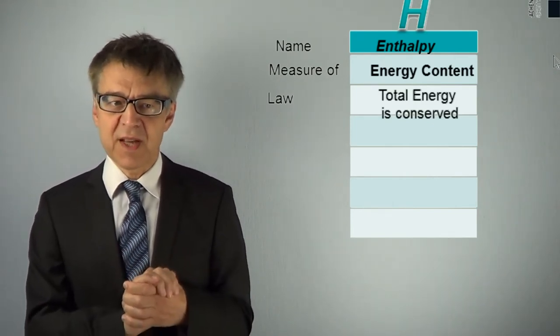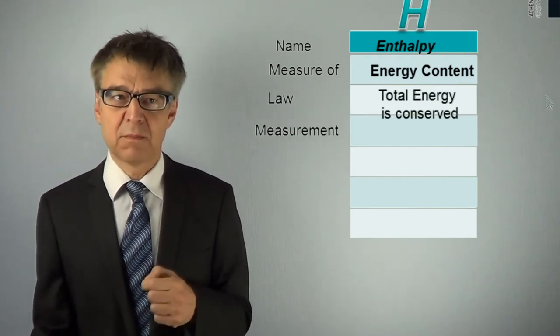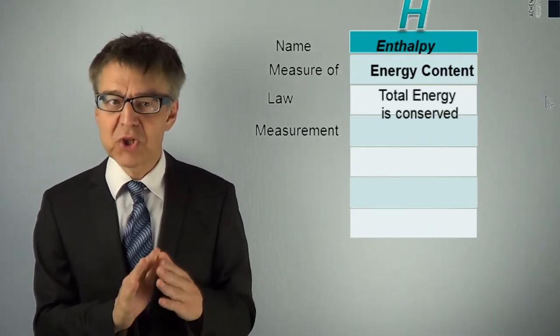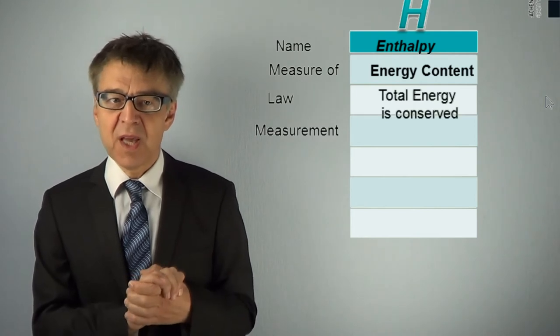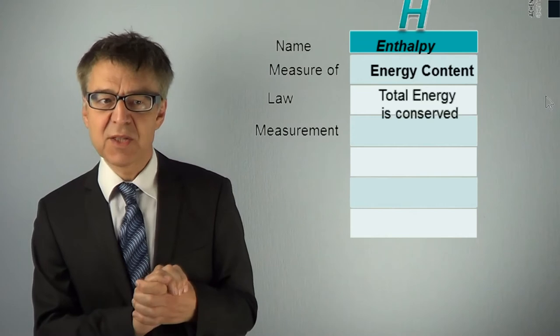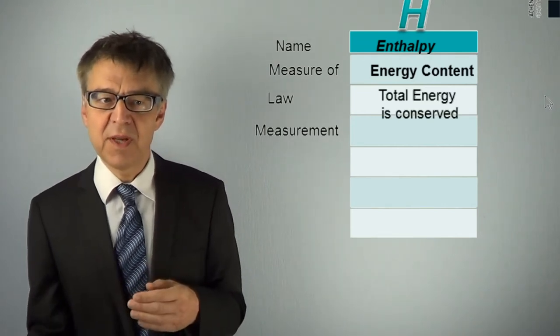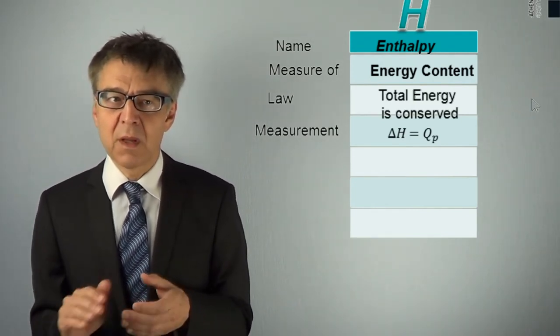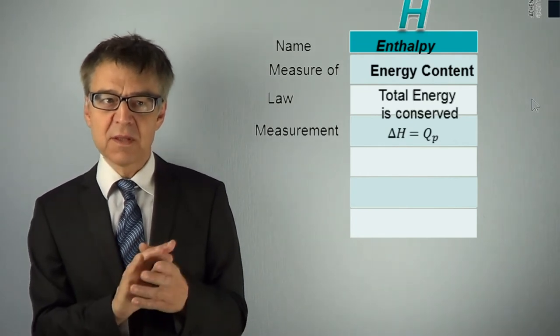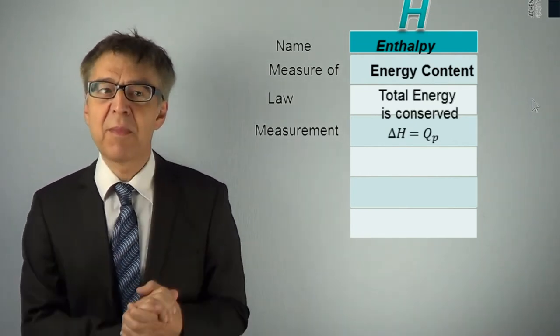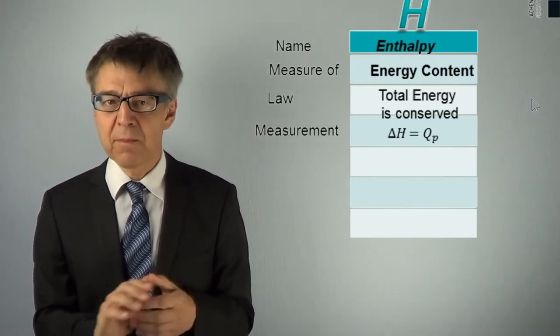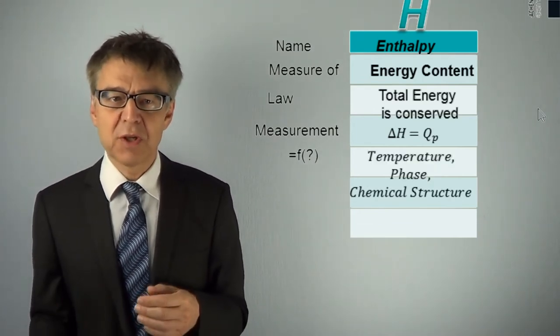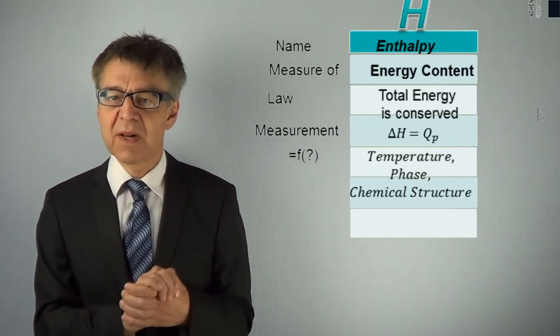Each variable in science must be measurable. Although the absolute value of the enthalpy is not available, enthalpy changes are very easy to measure. Each amount of heat, which is measured in the spontaneous isobaric process, corresponds to an enthalpy change, delta H. The process variable heat does change to a state variable for this specific case. Enthalpy does depend on several properties of the system, in particular on temperature, phase and on chemical composition.